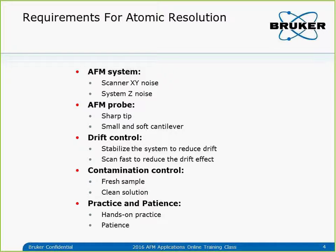Next is the AFM probe — that's an important factor. We need to use a sharp probe because we are imaging the atomic lattice. A sharp probe is not that critical for contact mode probably, but it's very critical for peak force tapping mode because we want to image those lattice sites one by one, not many together. For probe size, a small and soft cantilever is important. The small cantilever has better deflection sensitivity — it's more sensitive — and a soft cantilever can control the force better.